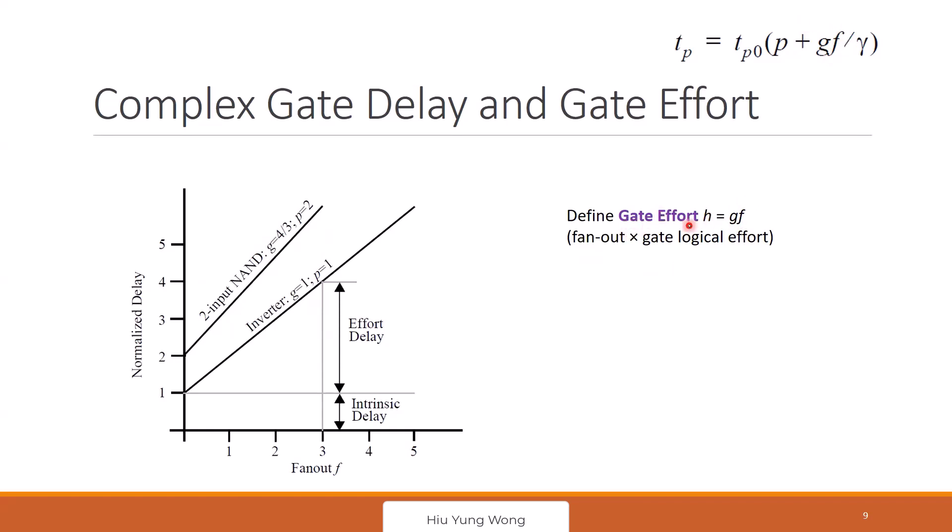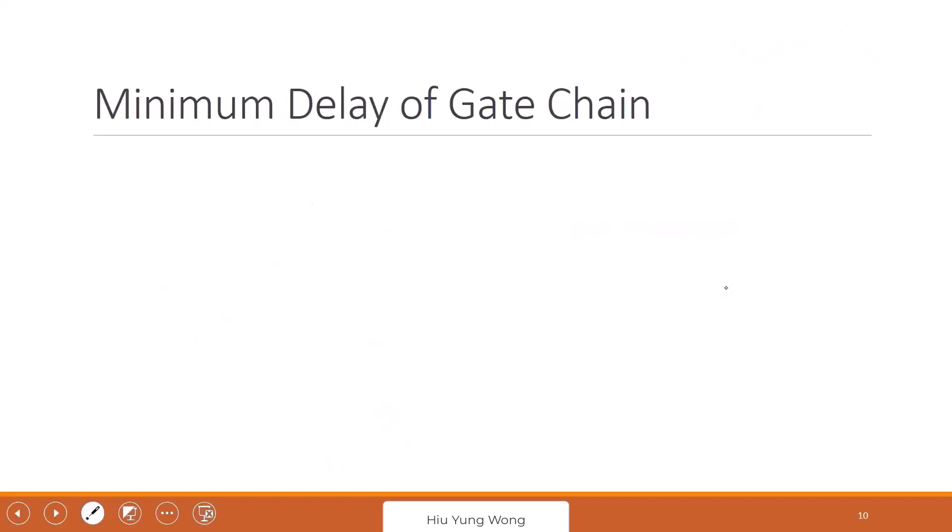So here we define one thing you find very important. It's called G times F, which we call the gate effort, H. Just a definition. So this can be confusing. If I were you, I will write in the cheat sheet. So don't get confused. Remind yourself, G times F is the gate effort. Now with this, then I can start playing with a general logic gate chain, not just inverter.